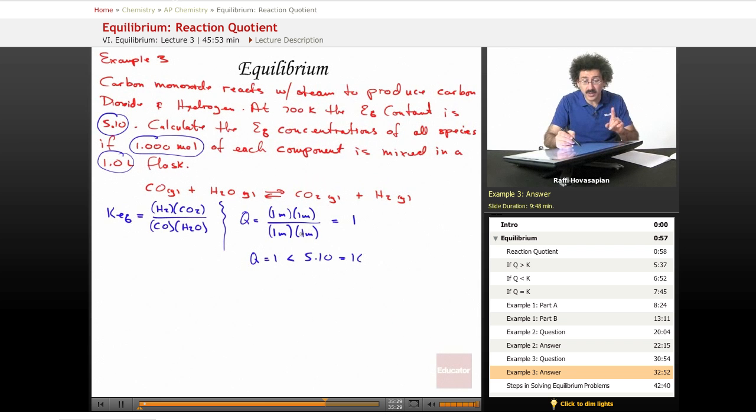So again, these one molar, that came from where we started at that moment. At any given moment, I stick in one mole of each in a one liter flask, and let me find out what this value is. It's one. It's less than the equilibrium constant. That means it's going to move forward to the right.